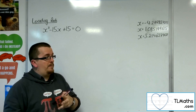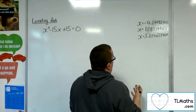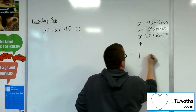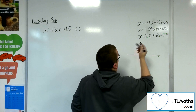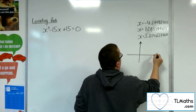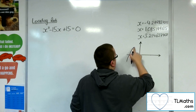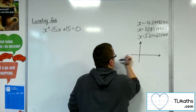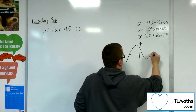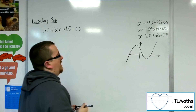This is really to develop the concept. So this curve, if I was to sketch it, would look something like this — going through minus 4.3, so somewhere over here, 1.08 and then 3.21. So these are the three points of intersection with the x-axis.